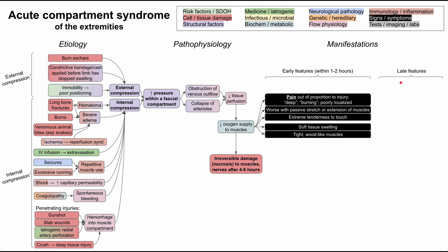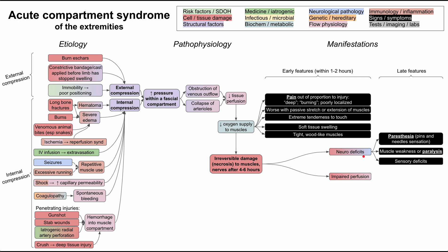Patients may also have significant soft tissue swelling, with muscles feeling tight and wood-like. Comparing to the unaffected limb is especially helpful. Late features arise from irreversible muscle damage, neuro deficits, and impaired perfusion. Neuro deficits manifest as paresthesias — a pins-and-needles sensation — along with muscle weakness or paralysis and sensory deficits, with the entire limb potentially going numb. Impaired perfusion leads to a cold extremity that may become white with pallor, and absent or weak distal pulses.